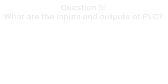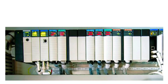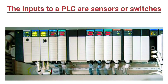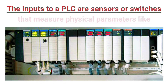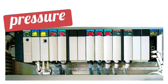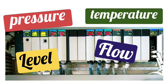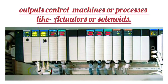Question 5: What are the inputs and outputs of a PLC? The inputs to a PLC are sensors or switches that measure physical parameters such as temperature, pressure, level, flow, and position. The outputs control machines or processes like actuators or solenoids.